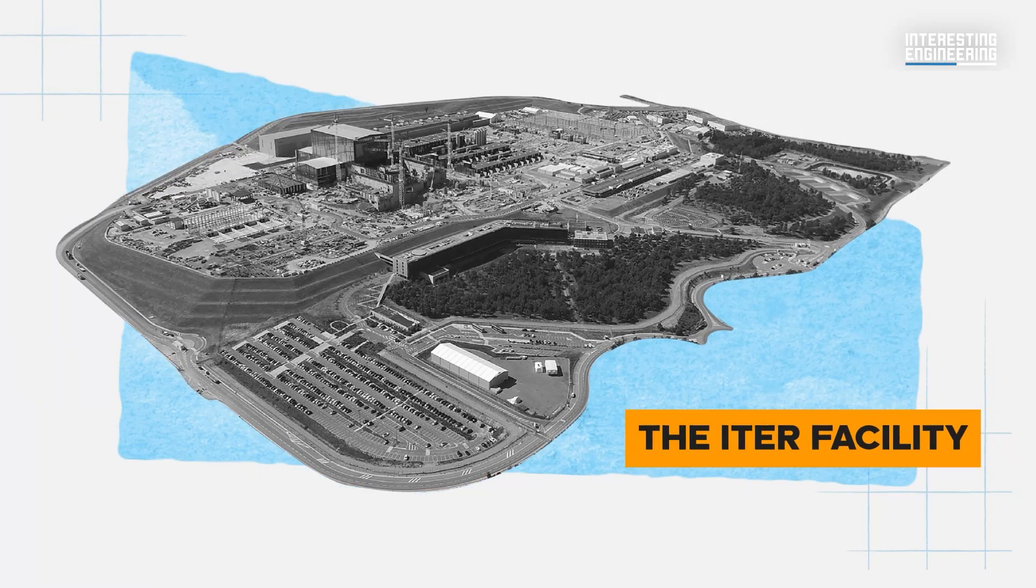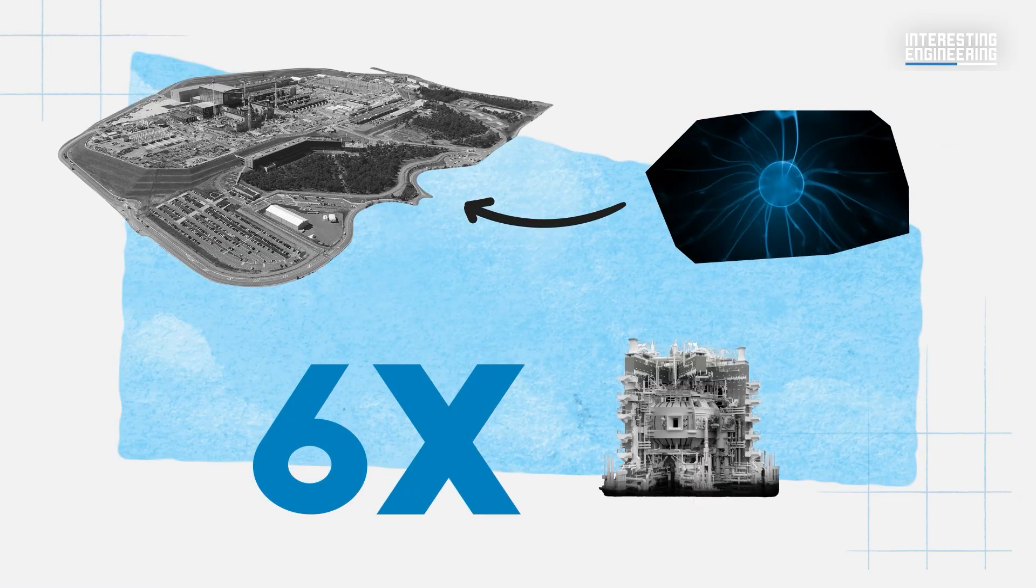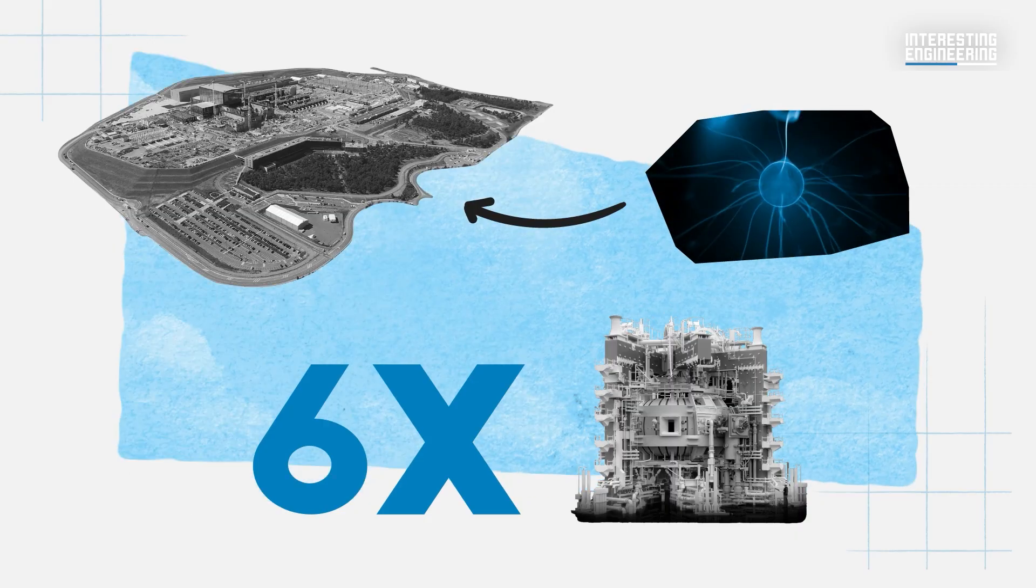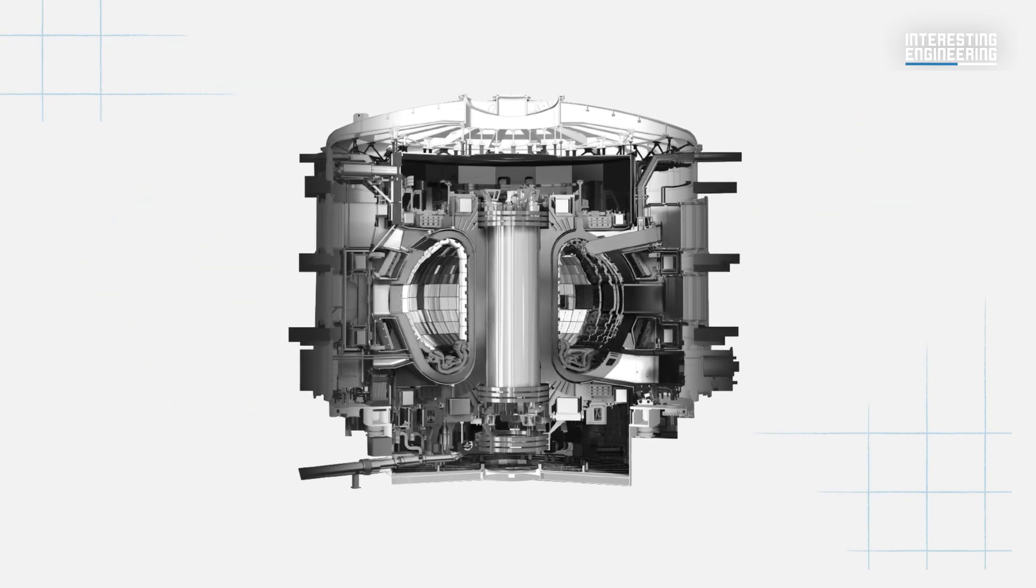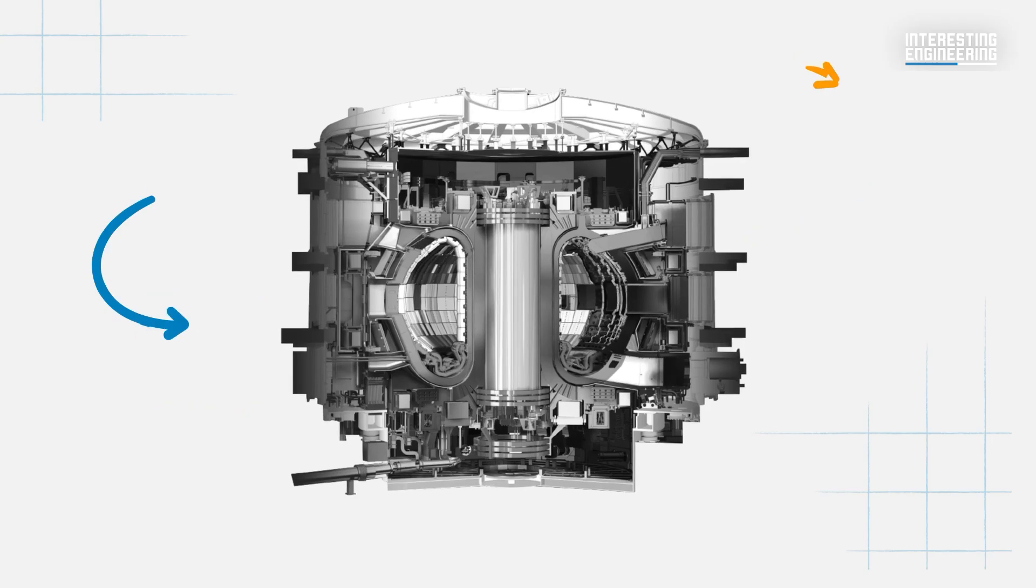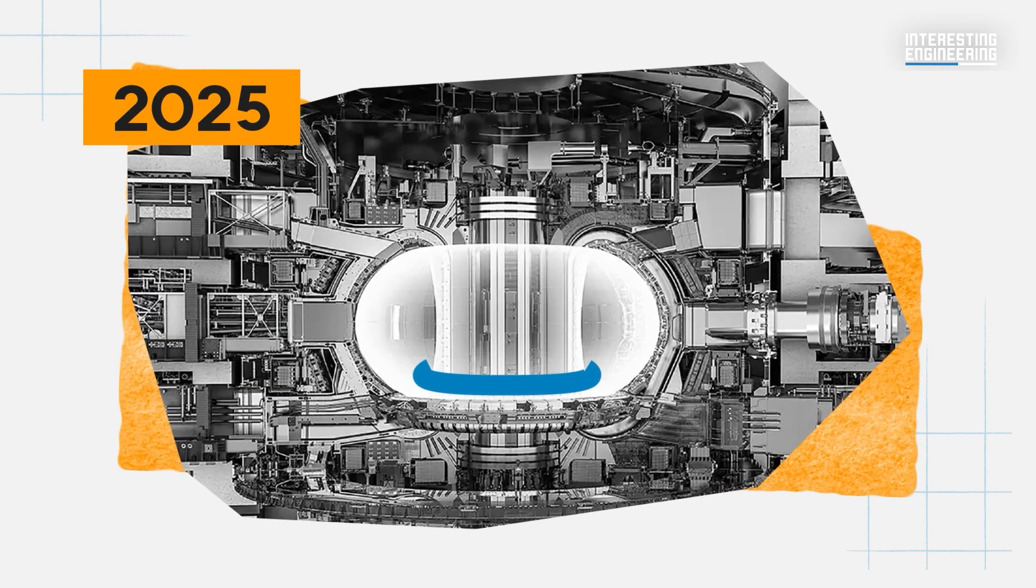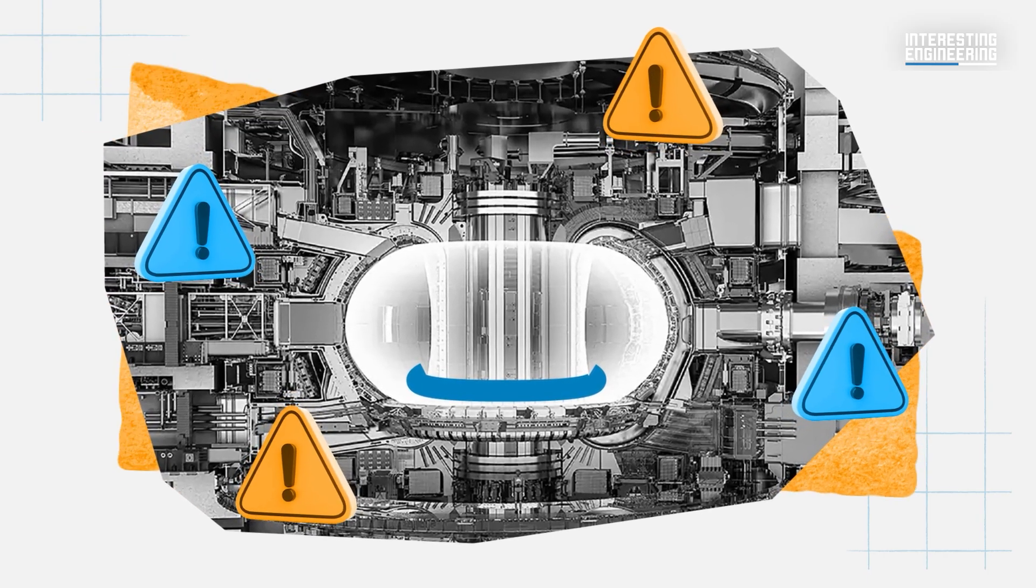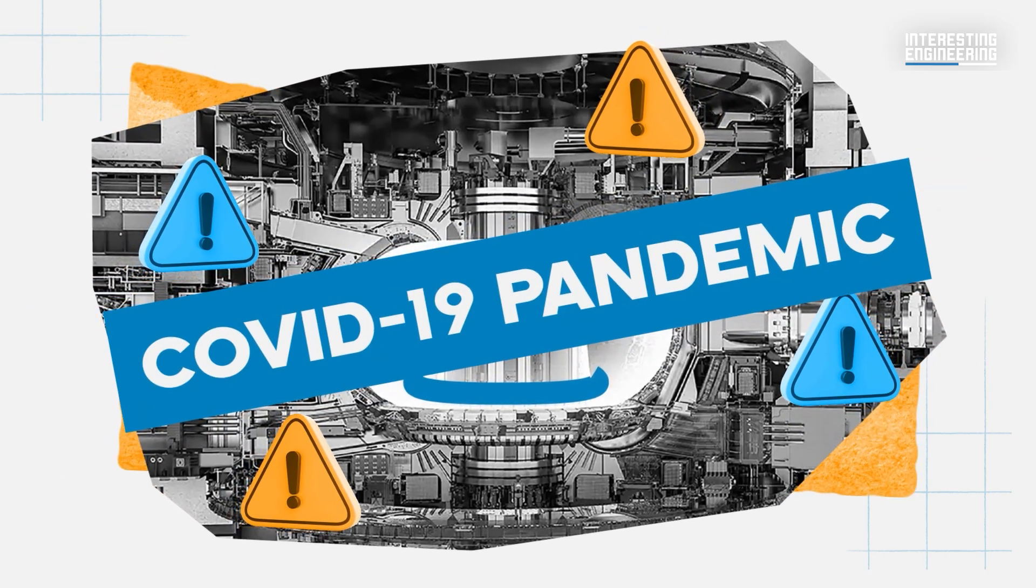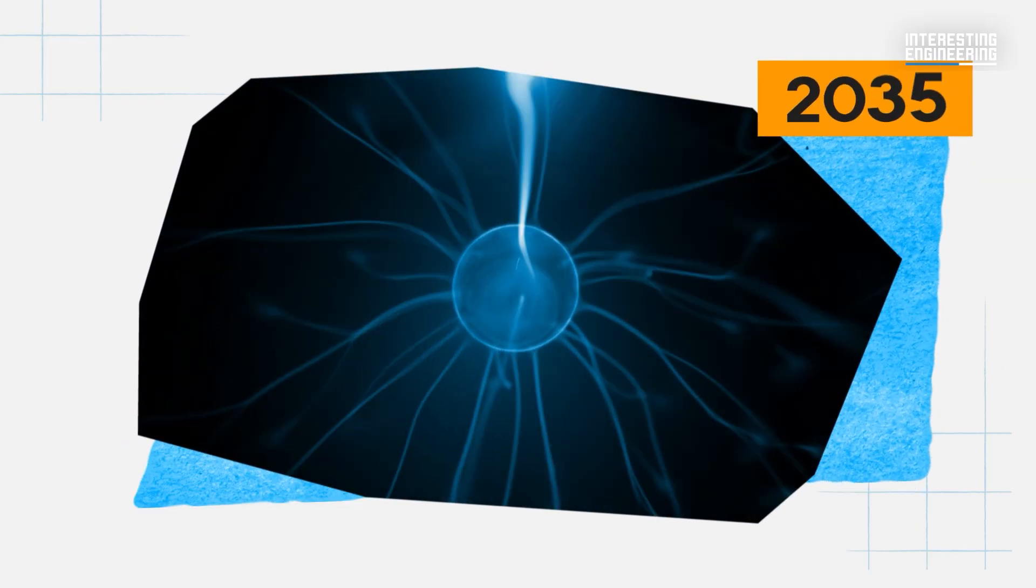The ITER facility is designed to hold six times the plasma volume of the Japanese JT-60SA, making it the largest of the 100 fusion reactors built in the past seven decades. The project was planned to attain its first plasma by 2025, but delays due to several issues, including the COVID-19 pandemic, have meant that the first plasma may only be achieved by 2035.